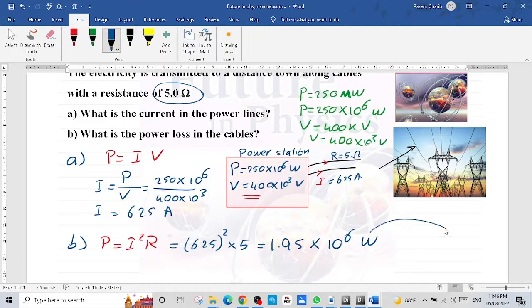If we need to convert watt to megawatt, we divide by 10 power 6. So the answer becomes 1.95 megawatt. This is the power in the cable.